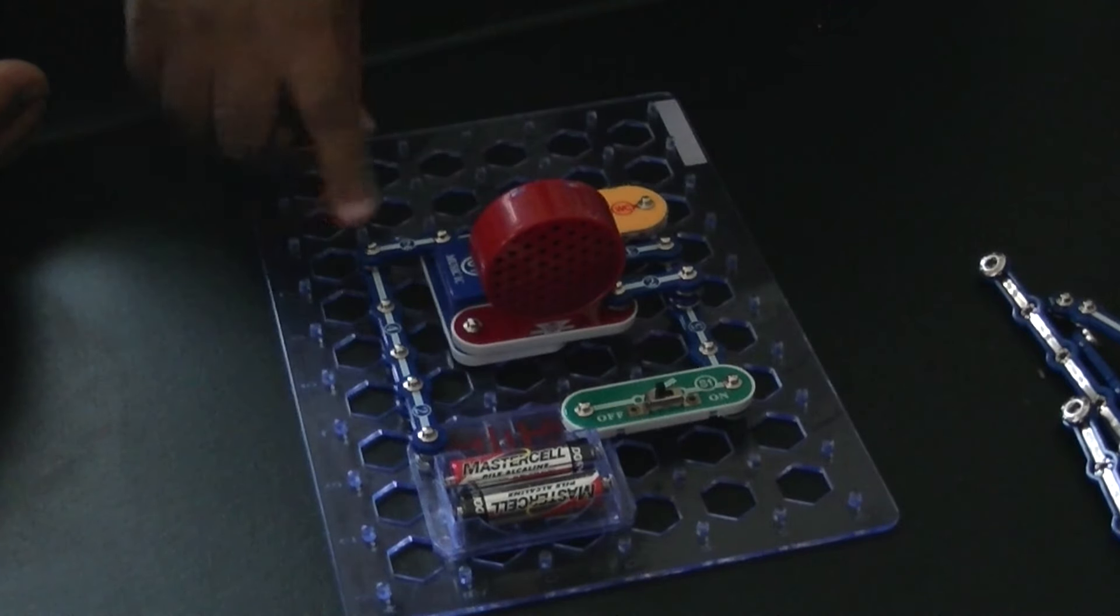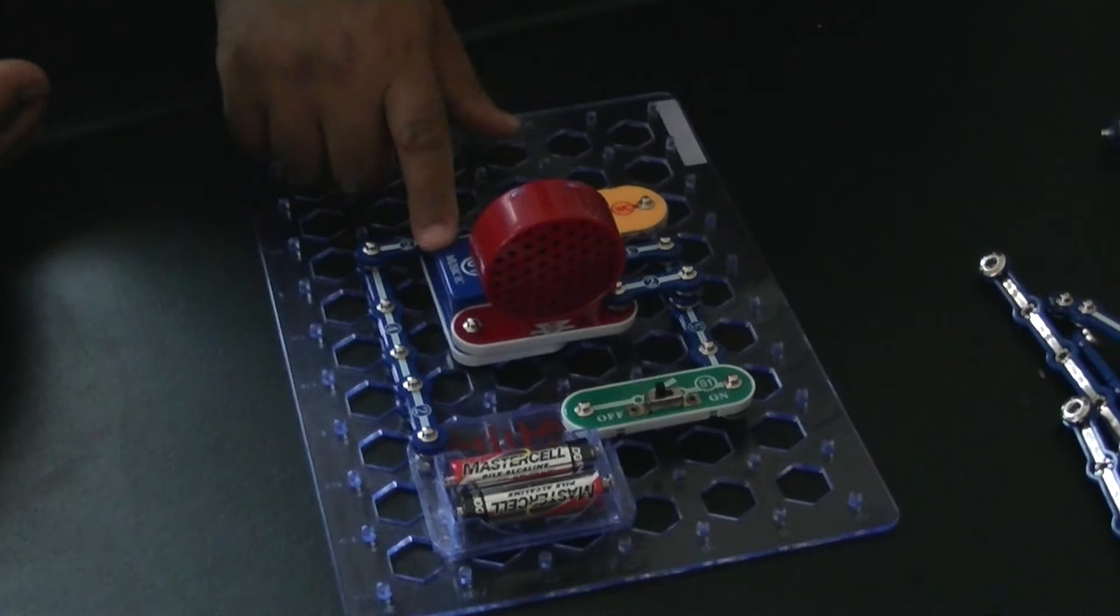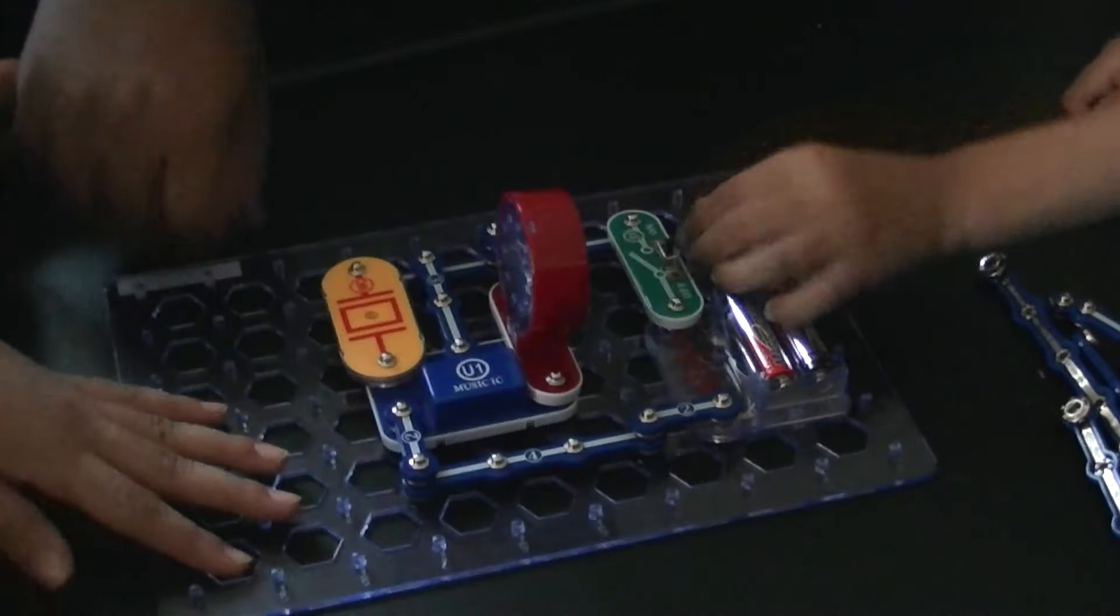This red one is a speaker. This one, as you can see, is a music chip and a whistler chip. Turn it this way so you can see.